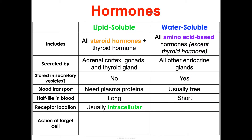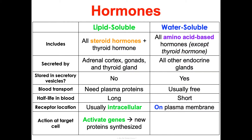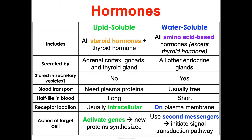Lipid-soluble hormones have intracellular receptors because they can travel through the plasma membrane, whereas water-soluble hormones bind receptors on the plasma membrane since they cannot pass through it. At the target cell, lipid-soluble hormones enter the cell and directly activate genes to synthesize new proteins. Water-soluble hormones use second messengers to initiate a signal transduction pathway.